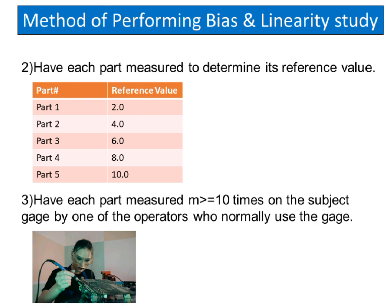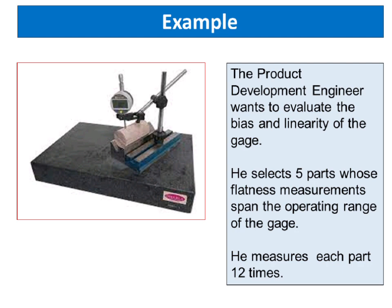For example, the product development engineer wants to evaluate the bias and linearity of the gauge. He selects 5 parts whose flatness measurements span the operating range of the gauge. He measures each part 12 times.